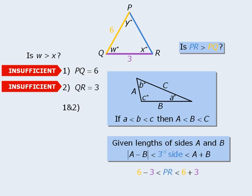When we apply this rule, we can see that the length of side PR, the blue side, must be greater than 3 but less than 9. So the blue side could be longer than the yellow side, but it could also be shorter than the yellow side.